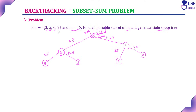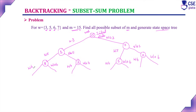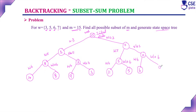Next, consider the third element 6. For each node, we branch with 6 and without 6. With 6 added to 8: 8 + 6 = 14 (required sum is 15). Without 6: value stays 8. With 6 added to 3: 6 + 3 = 9. Without 6: value stays 3. With 6 added to 5: 6 + 5 = 11. Without 6: value stays 5. With 6 added to 0: 0 + 6 = 6. Without 6: value stays 0.